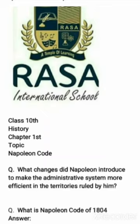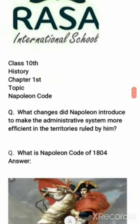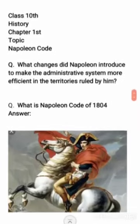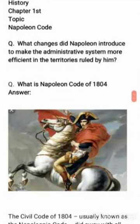What is Napoleon Code? I will try to explain all the topics well. First of all, we will understand the topic. We will talk about what changes Napoleon introduced to make the administrative system more efficient in the territories ruled by him. When Napoleon Bonaparte got the power, which way was France ruled? And he made a code called the Napoleon Code of 1804. When Napoleon came, how did he work in the administrative system? How did he change French society?